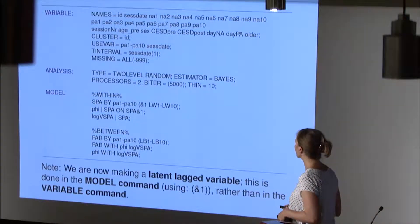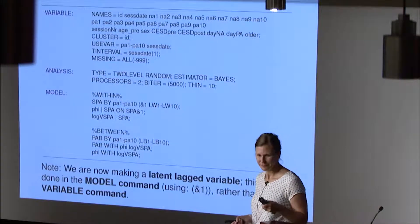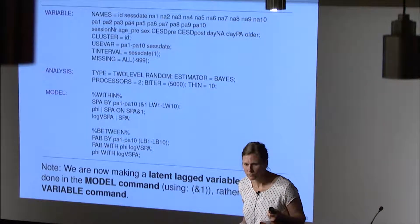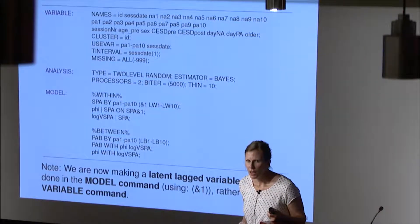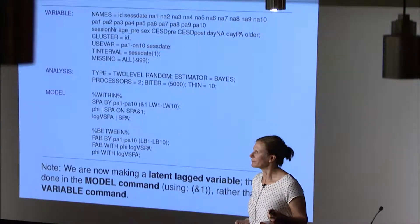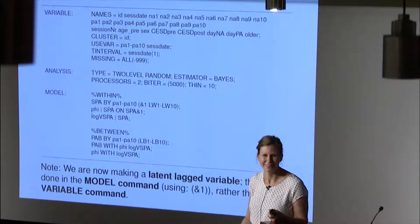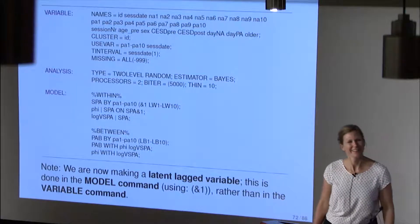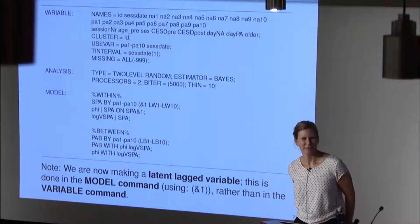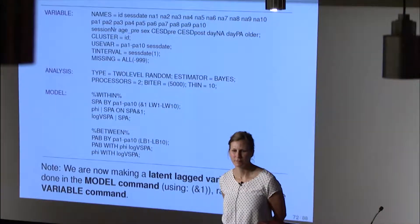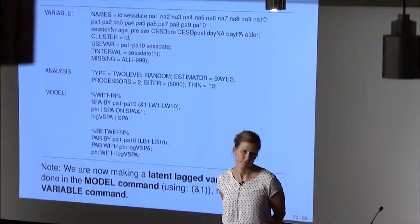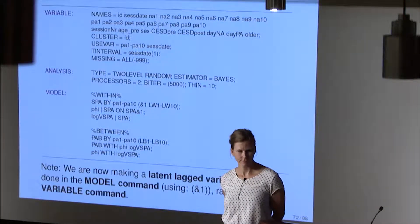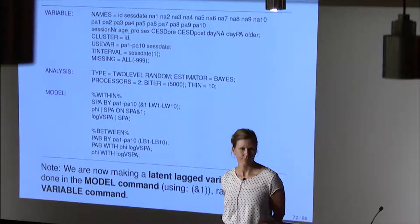Can you change it to a categorical variable and make that item response theory? That would be a question for Tiomir. Categorical latent variable or categorical observed? So categorical indicators of the factor instead of continuous — I'm going to show an example of that this afternoon.